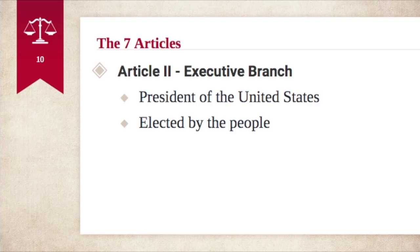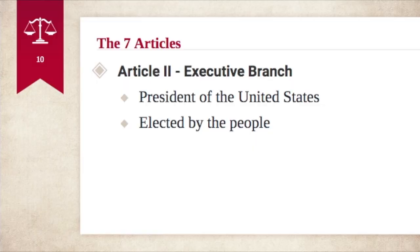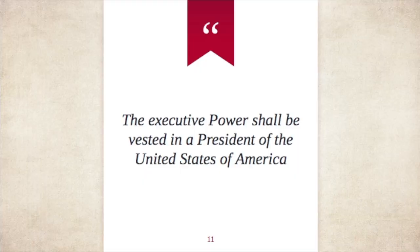Article two establishes the executive branch, which is the president of the United States. The executive branch is responsible for enforcing the laws of the land. It's not just the president — it also includes the vice president and various advisors. As an analogy, if you think of the United States like a company, the executive of the company is the president. Just like the legislative branch, the president is elected by the people through voting. A quote from Article Two reads: "The executive power shall be vested in a president of the United States of America."